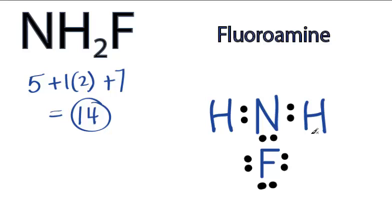Hydrogens only need 2 valence electrons to have their outer shell full, so we have 12, and then we'll go back to the Nitrogen and complete its octet with 14 valence electrons.